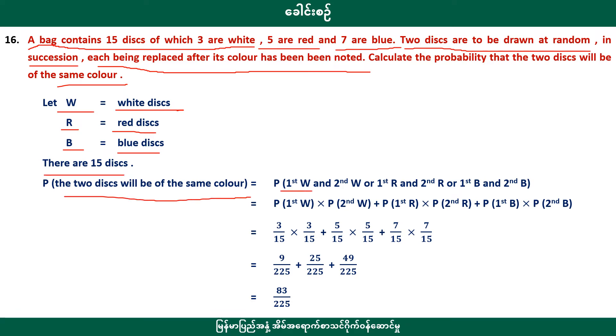First draw: white. First draw: white. First draw: red, second draw: red. First draw: blue, second draw: blue. We are looking for the probability that the two draws will be the same colour.